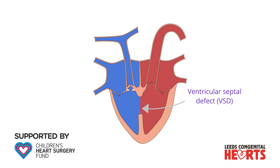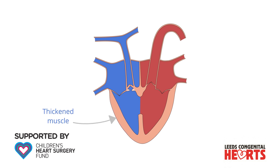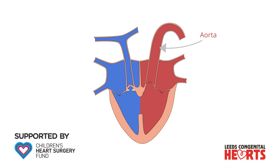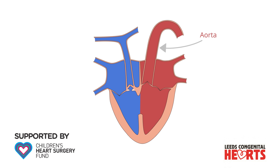There are two other characteristic features of Tetralogy of Fallot. The muscle of the right ventricle is thicker than normal, and this occurs because of the obstruction to blood flow to the lungs. Lastly, the position of the aorta — the main blood vessel that takes blood from the left ventricle to the body — is shifted so that it lies over the ventricular septal defect.